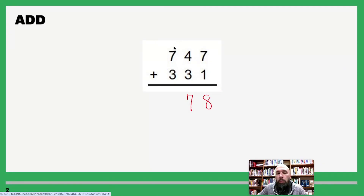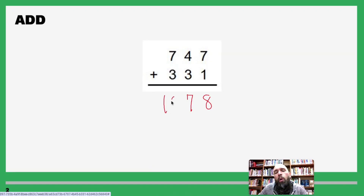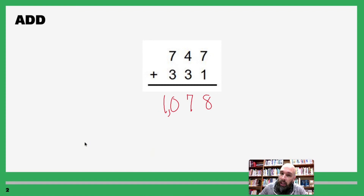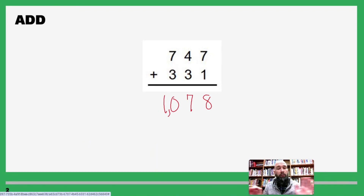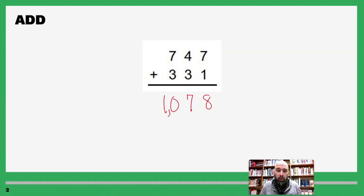Move to the next place value — that's our hundreds: seven plus three is ten. So our final answer is 1,078. Nothing fancy happened, nothing crazy — we were just adding and we got nice numbers.